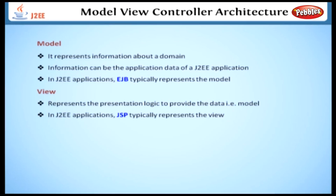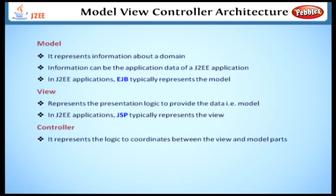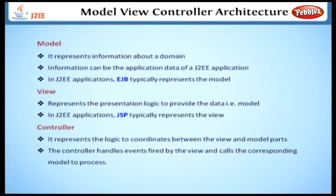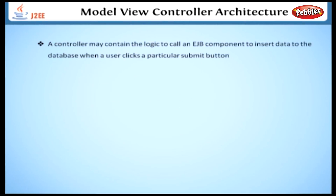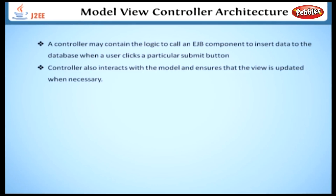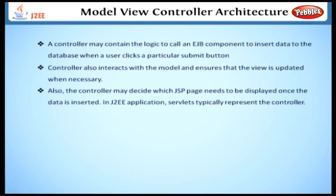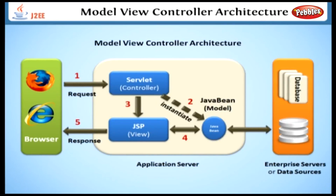In J2EE applications, JSP typically represents the view. Controller — this represents the logic to coordinate between the view and model parts. The controller handles events fired by the view and calls the corresponding model to process. For example, a controller may contain the logic to call an EJB component to insert data to the database when a user clicks a particular submit button in the user interface. The controller also interacts with the model and ensures that the view is updated when necessary. The controller may also decide which JSP page needs to be displayed once the data is inserted. In a J2EE application, servlets typically represent the controller.